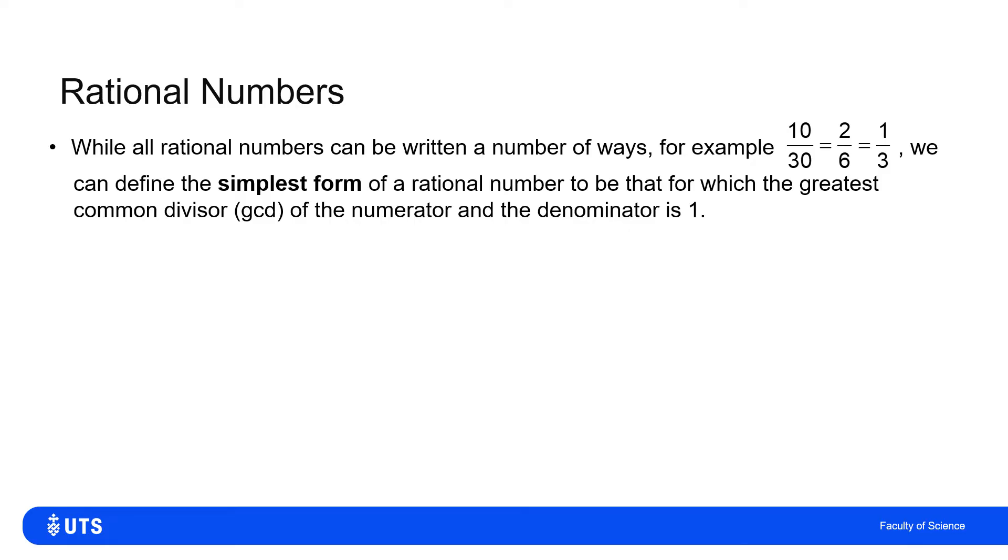One third then is the simplest form. So a bit more notation, we define the simplest form of the rational number N equals A over B to be such that the greatest common divisor of A and B is one.